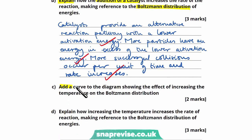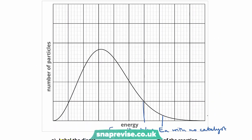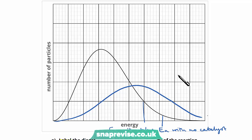In part C, we're asked to add a curve to the diagram showing the effect of increasing the temperature on the Boltzmann distribution. When we increase the temperature, we increase the rate of reaction. The curve we draw needs the same area because it's the same number of particles, but with a lower peak and shifted to the right — something like this. This indicates that more particles have a higher energy as we've increased the temperature, but there is exactly the same number of particles.